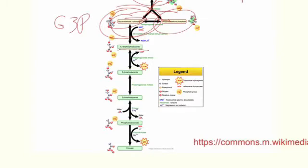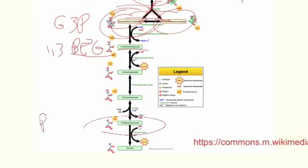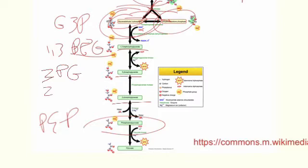And then the next molecule, 1,3-bisphosphoglycerate is often labeled 1,3-BPG, bisphosphoglycerate. The other label that's often used is phosphoenolpyruvate is usually labeled PEP, P-E-P. And then in the middle here, this 3-phosphoglycerate and 2-phosphoglycerate, often labeled 3-PG and 2-PG.